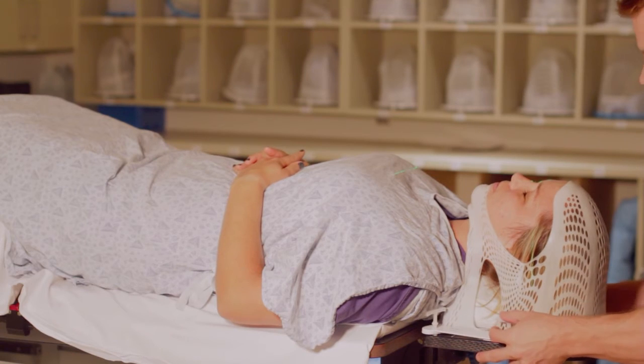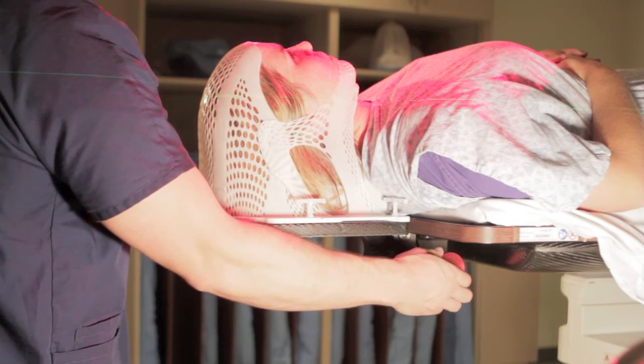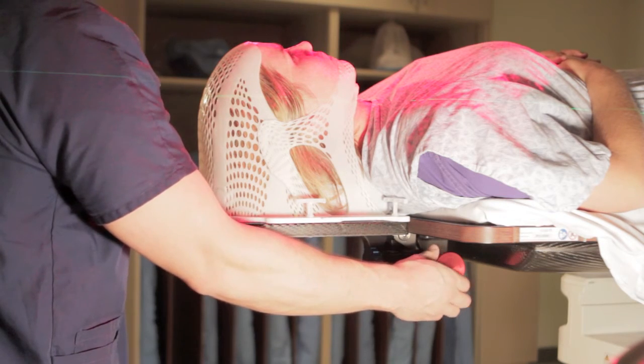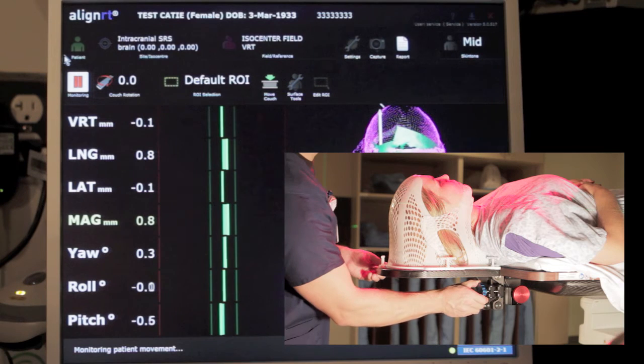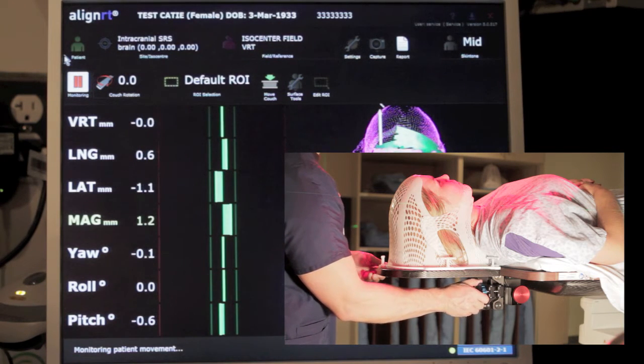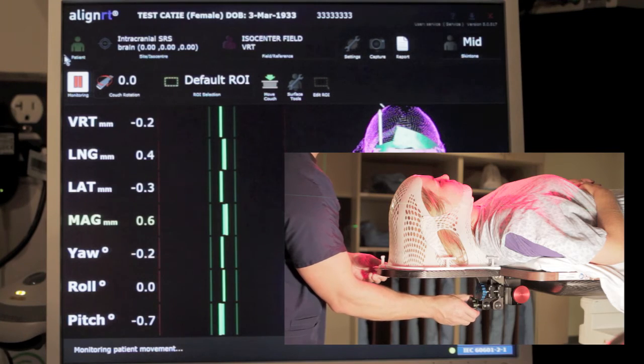Once the mask is on, we can start making those finer adjustments. First of all, we perform all the required rotational corrections, namely the yaw, pitch, and roll, by fine-tuning their values using the knobs on the head adjuster. We then use the couch control to apply any remaining translational corrections.